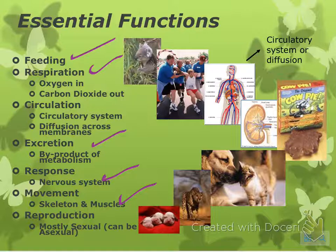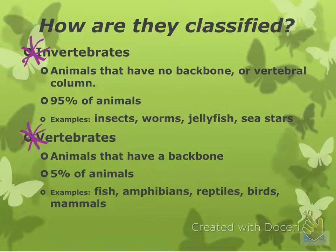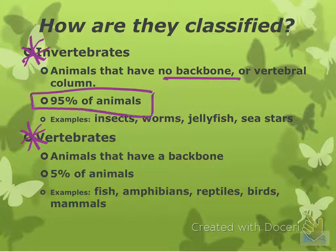Most animals reproduce sexually, although a few can be asexual. So how are they classified? Two ways: we have invertebrates and vertebrates. Invertebrates obviously have no backbone or vertebral column, and these are actually 95% of all animals in the world, believe it or not.